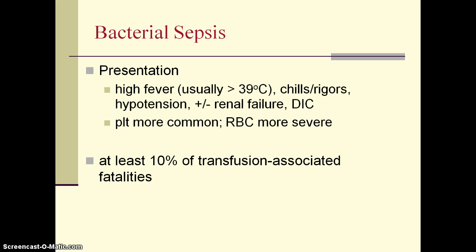Bacterial sepsis should be suspected if the patient has a severe febrile response, usually with temperature going above 39 degrees Celsius. This may be associated with severe chills and rigors, plus or minus hypotension, renal failure, and disseminated intravascular coagulopathy. Bacterial sepsis is more common with platelet transfusions due to room temperature storage, but with RBCs, reactions are more severe because the culprit organisms are gram-negative organisms.